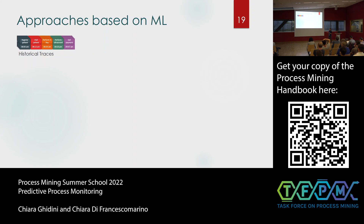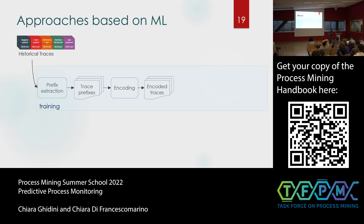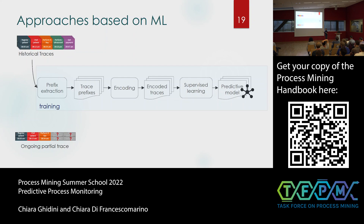For machine learning or deep learning based approaches, the pipeline is slightly different: first, we extract prefixes from the event log; then encode these prefixes into a format understandable by machine learning techniques; then apply a supervised learning technique. This is what we do at training time with our post-mortem event data. At runtime, we have our not-yet-completed execution trace, encode it the same way, and query the machine learning model to get the prediction.